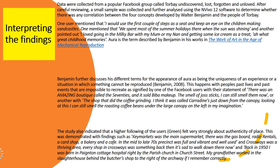Benjamin used different terms for aura as being the uniqueness of an experience or situation in which something cannot be reproduced. This happens with people's past lives and past events that are impossible to recreate, as signified by Facebook users: 'There was an amazing boutique called the 70s, which sold Biba makeup — the smell of joss sticks, I can still smell them now.' Or: 'The shop that did the coffee grinding — I think it was called Carradine's — just down from the canopy. I can still smell the roasting coffee beans in my imagination.' The smell of the coffee beans and the Biba makeup are also an aura.